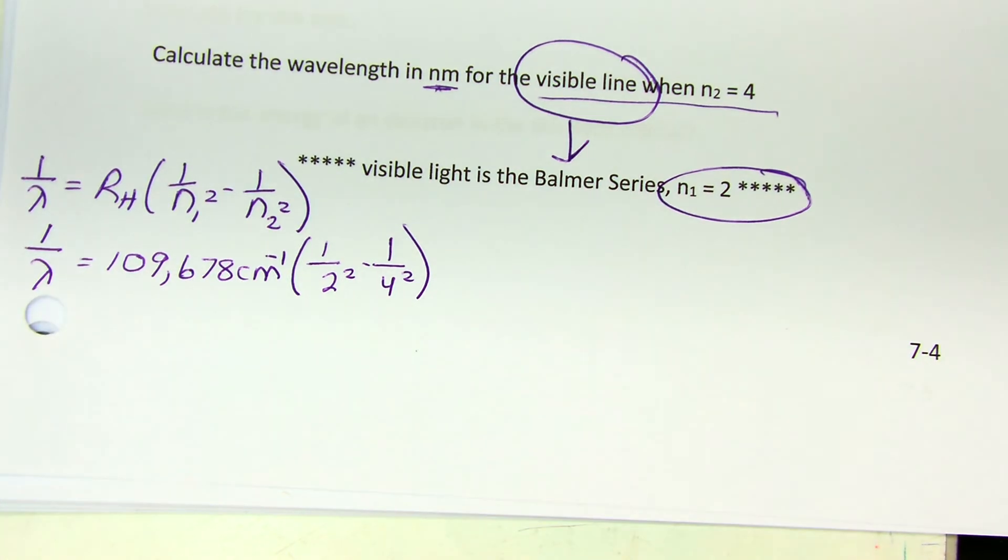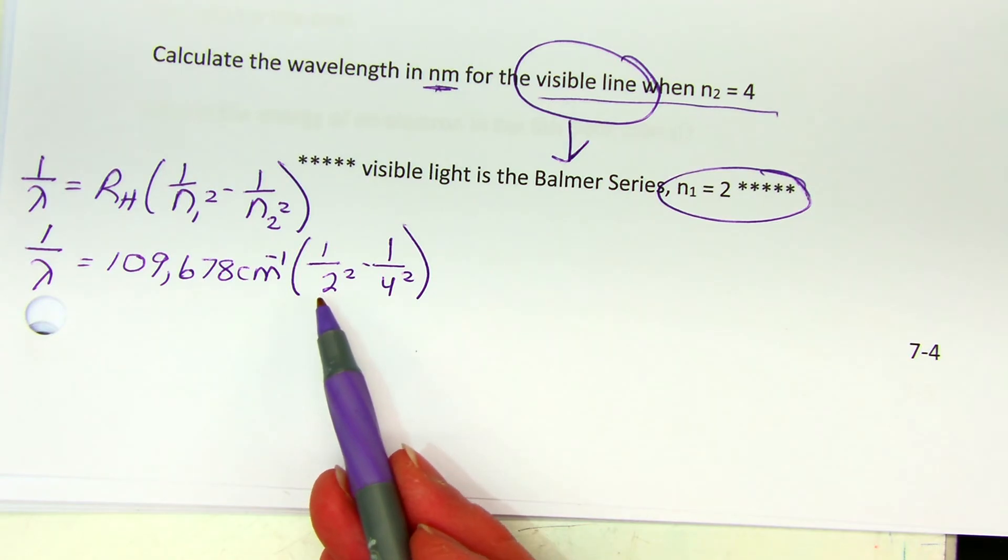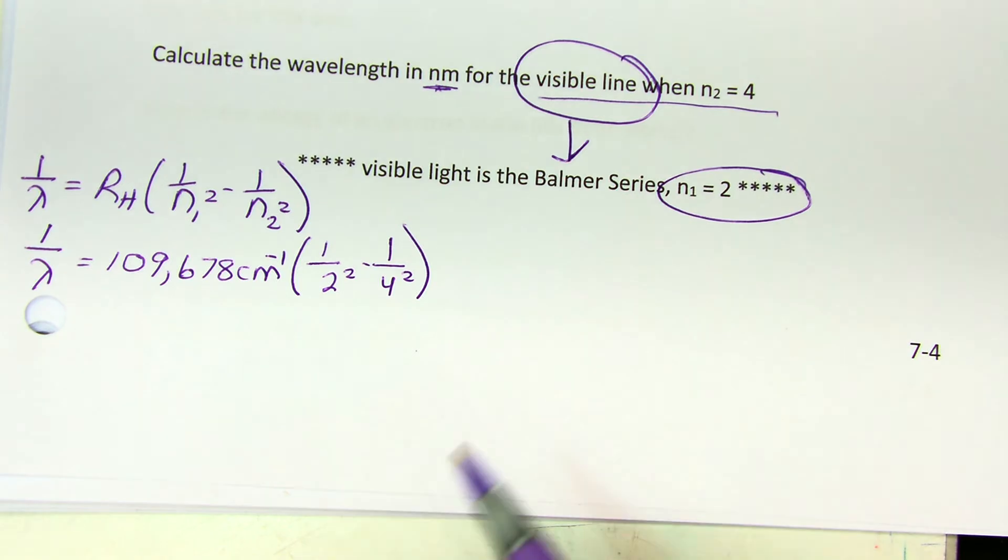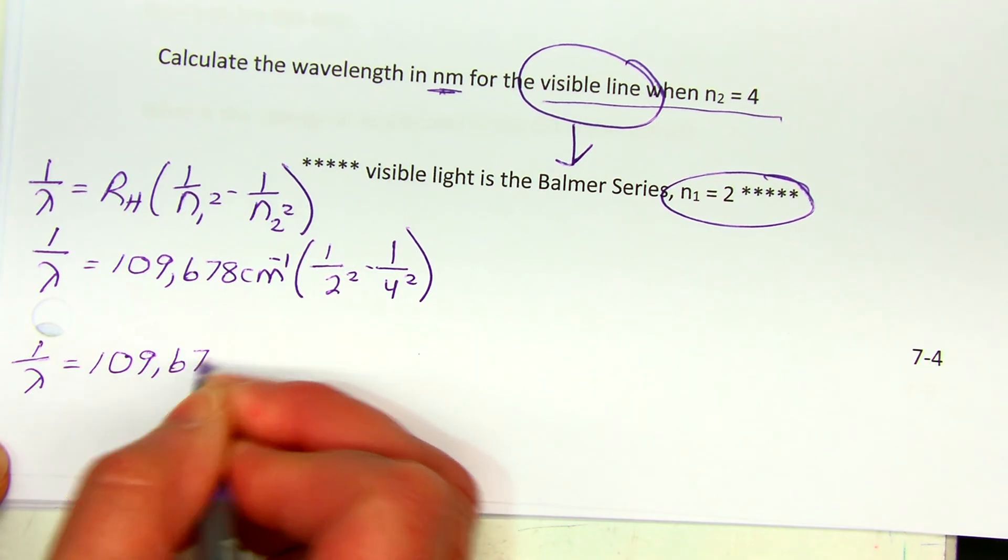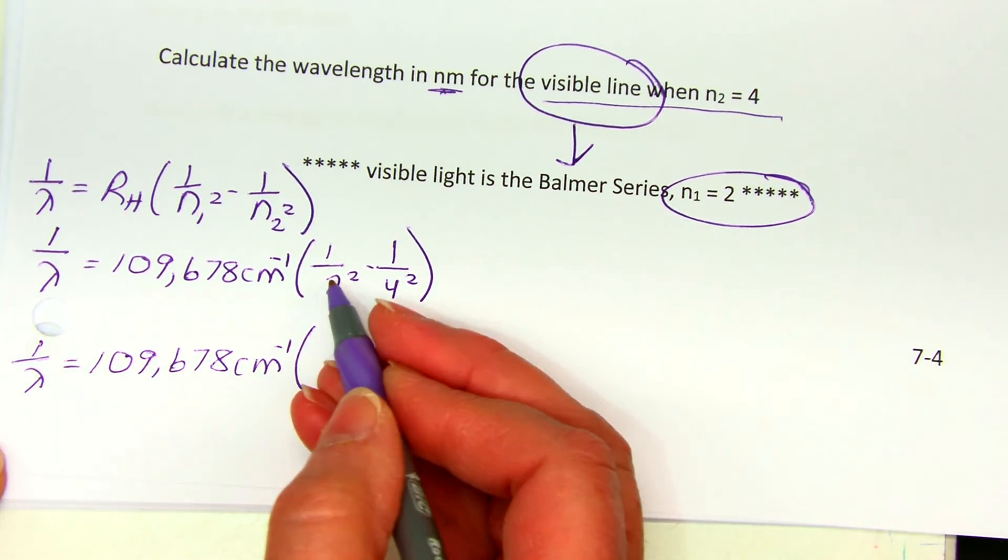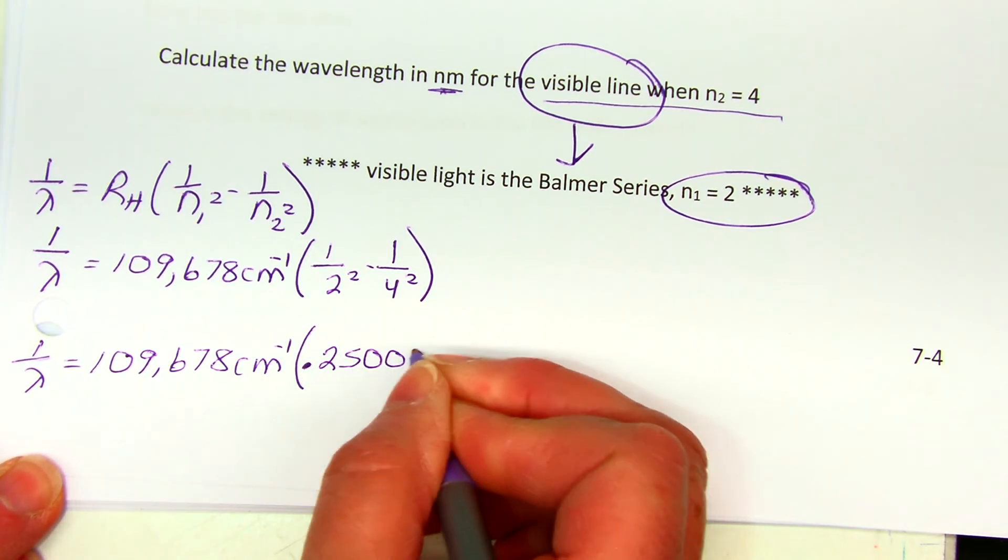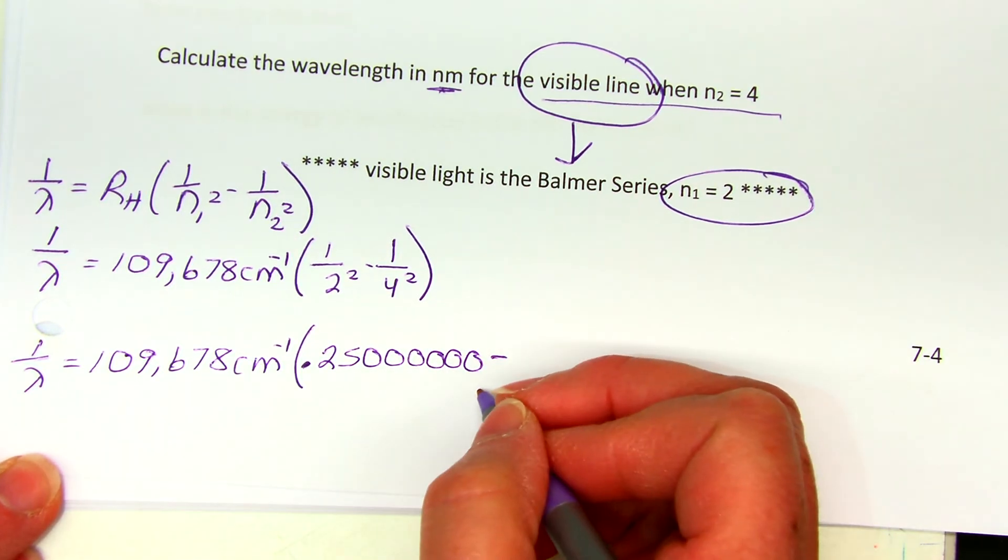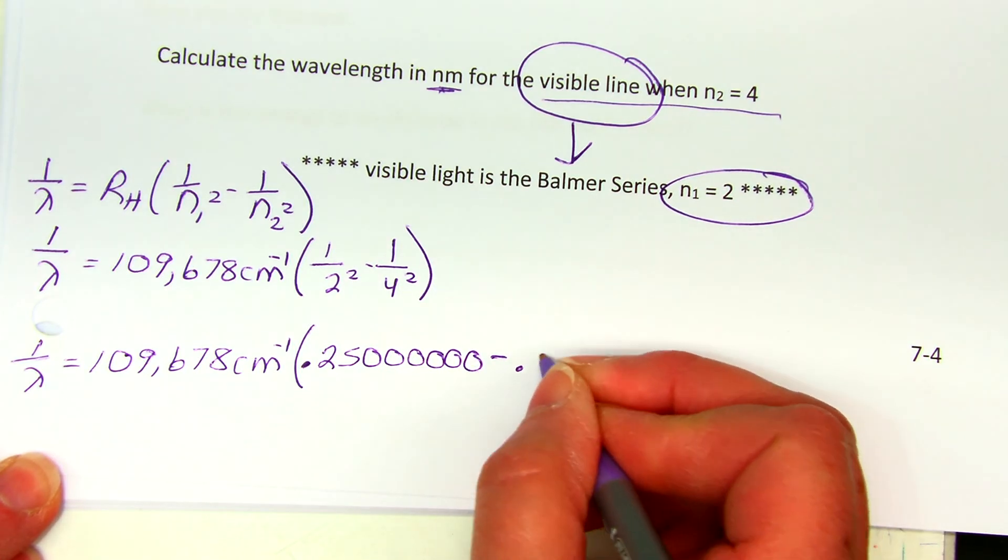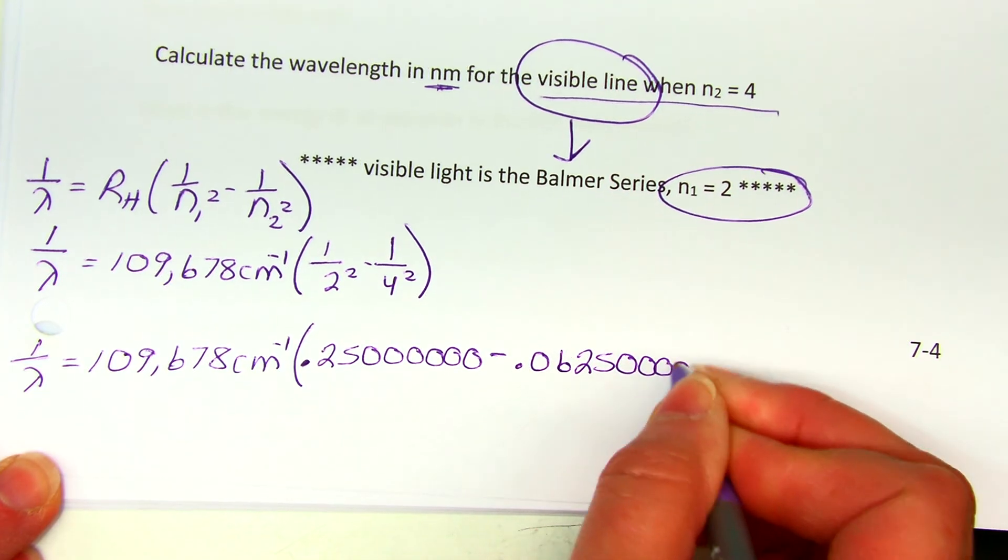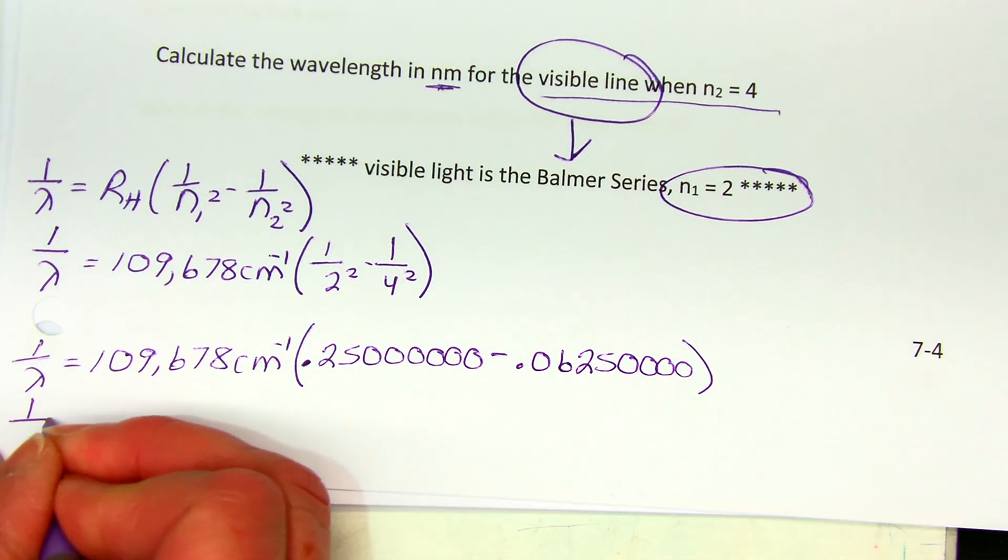2 and 4 are integers, so they do not interfere in significant figures and they don't contribute to significant figures. We have six significant figures in the constant, so I want to keep at least six significant figures. When I do my subtraction, I'll start off: 1 over lambda is 109,678 reciprocal centimeters. Now I'm going to convert this: two squared is four, so one fourth is 0.25, and I'm going to add enough zeros that I'll be able to keep six significant figures when I'm done subtracting. Four squared is 16, one sixteenth is 0.06250, and again I want as many sig figs as I need so that I can have six significant figures when I'm done.